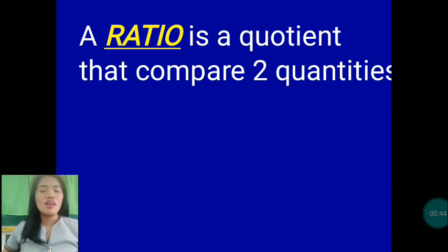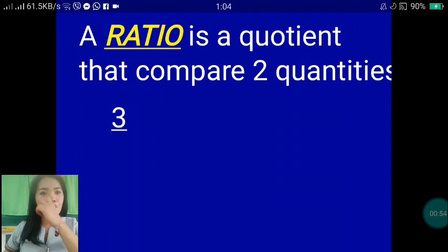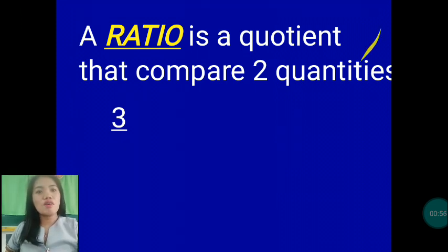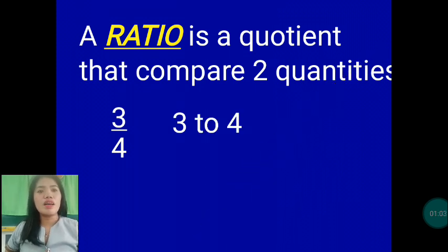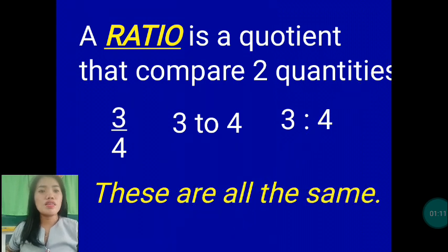What is ratio? A ratio is a quotient that compares two quantities, and there are three presentations of a ratio. You have 3 over 4 — that is in fraction form — or 3 to 4, or you also have 3 is to 4. These three presentations are all the same.